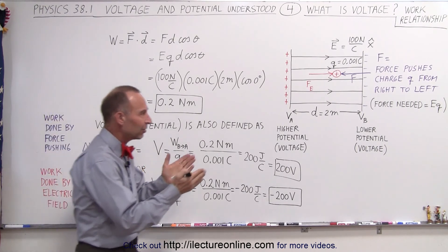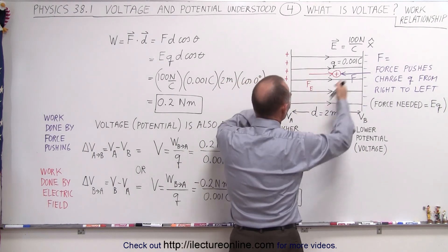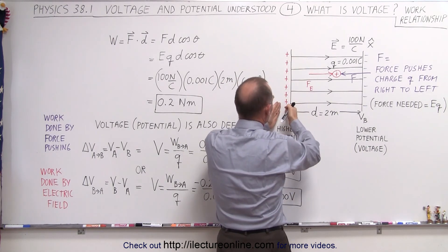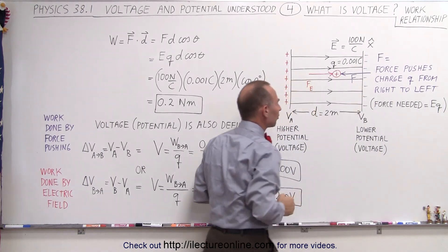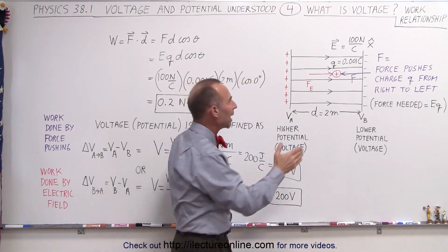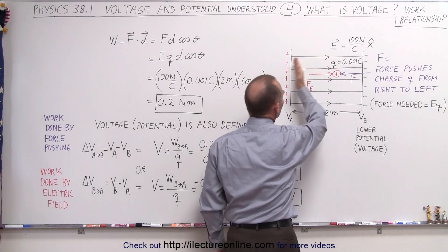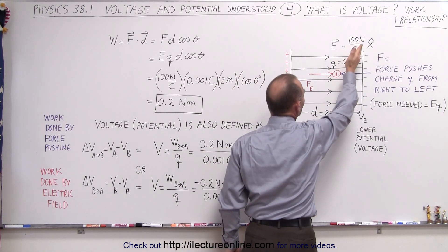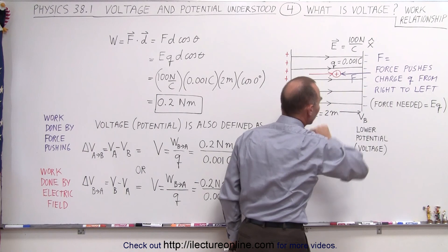Here we have the same situation as in the previous video. We have two metal plates — extra positive charge on the left plate, extra negative charge on the right plate — and an electric field between the plates equal to 100 N per Coulomb directed in the positive X direction.